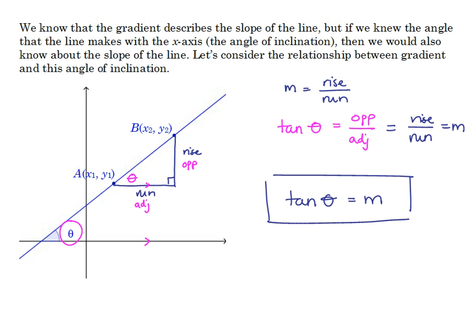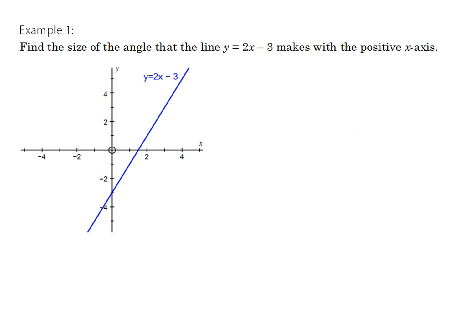Now we need to be a little bit careful with how we interpret theta in terms of which angle theta is actually referring to. We'll have a look at a couple of examples to see what's happening here. But essentially, we've got this relationship that tan of the angle is going to be related to the gradient of the line. So let's have a look at this example here. Find the size of the angle that the line y equals 2x minus 3 makes with the positive x-axis.